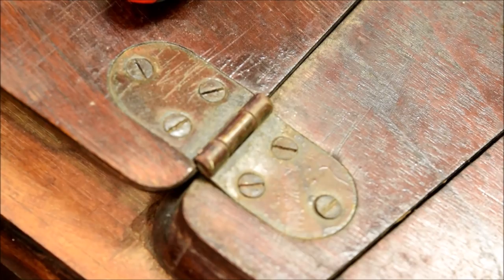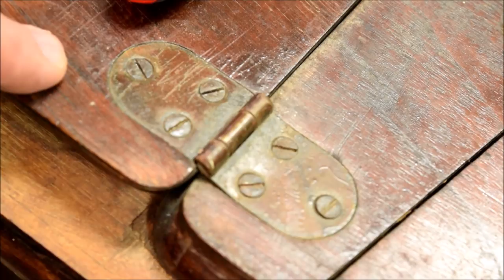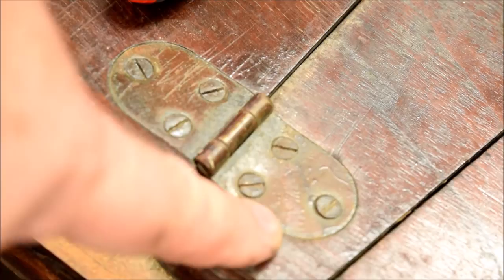Okay, this is the hinge that holds the lid on. The most important thing to remember about this is there's two different size screws here. These are short. These are long. Don't mix them up during reassembly or it will end in tears, I promise you.